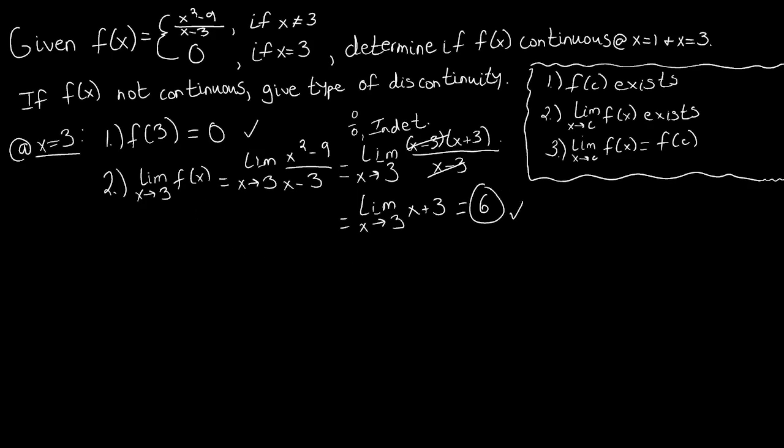The limit as x approaches 3 of f of x exists, but then part 3 of being continuous at this point of 3 is do these values match? Does 0 equal 6? The answer is no.